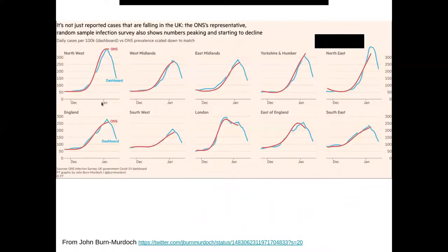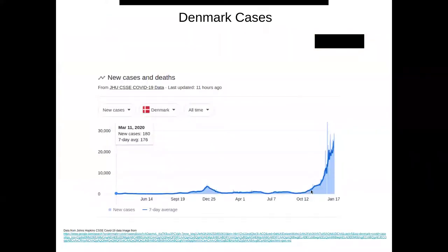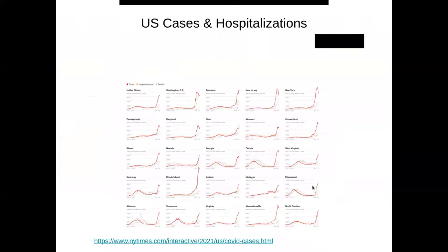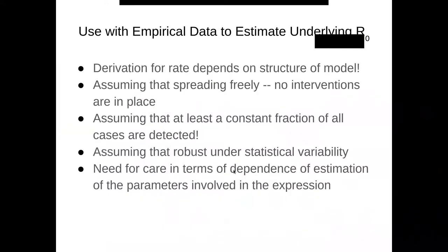Or this graph from South Africa from the Discovery Health analysis. This is from the UK — from John Burn-Murdoch — showing Omicron in different areas. And you again start to see a certain plausibility. Mind you, this is not an entirely disease-free equilibrium, but you can very much see the exponential curves — Denmark for Omicron, Norway for Omicron, US cases and hospitalizations for various states. Early on in these outbreaks you often get exponential growth.